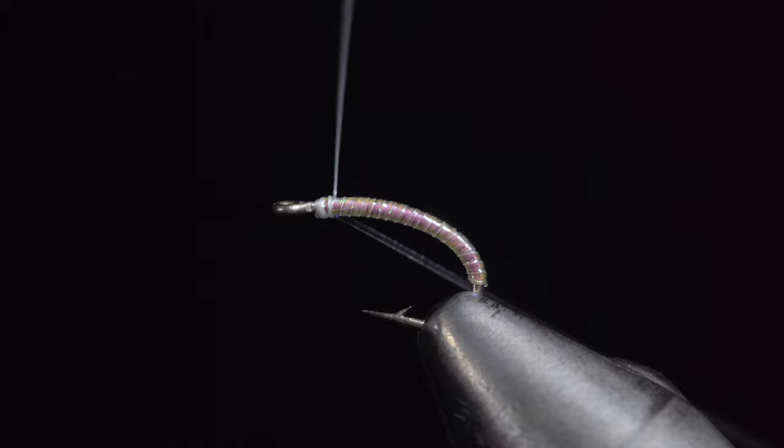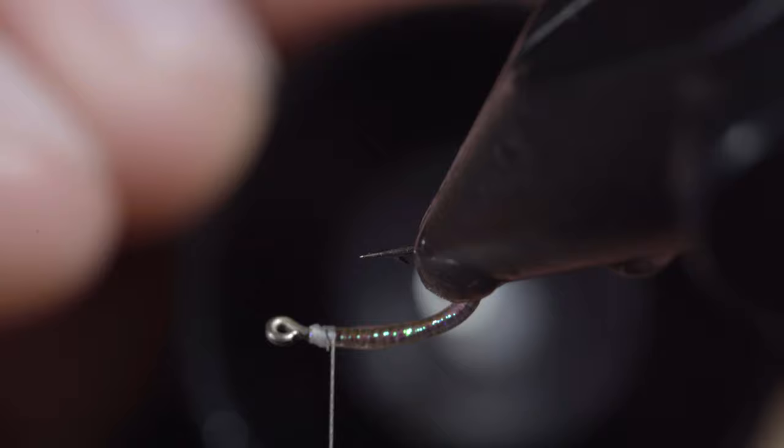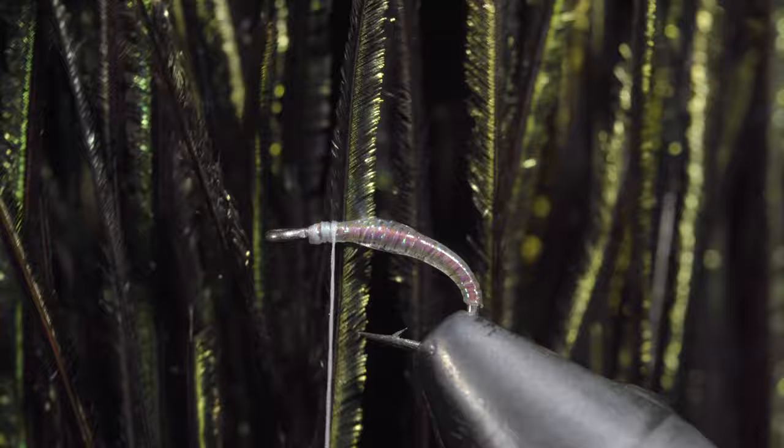To increase the fly's durability, as well as its shine, we'll add a small layer of UV resin, here I'm using a thin bone dry. Once happy, secure with a UV light and grab some peacock hurl.